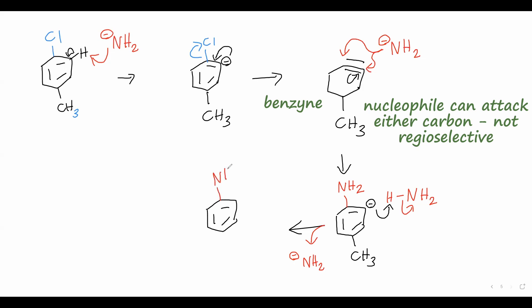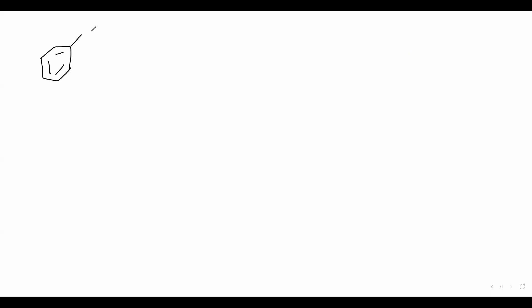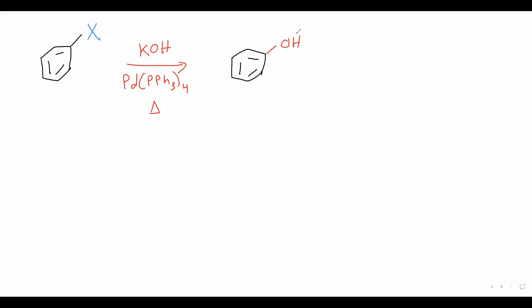We've now talked about two different ways to produce phenols from benzene. Let's look at one last approach: starting with a general halobenzene — X can be chlorine or bromine — and treating it with potassium hydroxide and a palladium(0) catalyst. One common catalyst is tetrakis(triphenylphosphine)palladium(0), meaning four triphenylphosphine ligands around the palladium center. Heating this up allows a substitution to produce the phenol from the halobenzene. This mechanism is very similar to palladium-catalyzed cross-couplings like the Heck reaction or the Suzuki coupling.